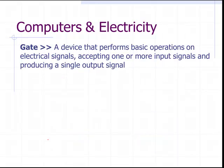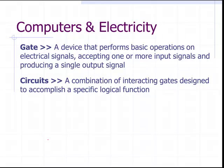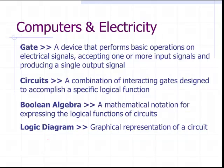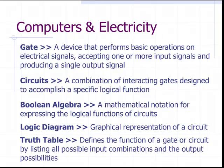Now let's look at some terminology. When I say a gate, we're talking about a device that performs basic operations on electrical signals, accepting one or more input signals and producing a single output signal. When you combine gates together to accomplish a specific logical function, we call those circuits. To represent a circuit mathematically, we use Boolean algebra — a mathematical notation for expressing the logic functions of circuits. A circuit can also be represented graphically using a logic diagram, and you can define the function of a gate or circuit by listing all possible input combinations and output possibilities using a truth table.